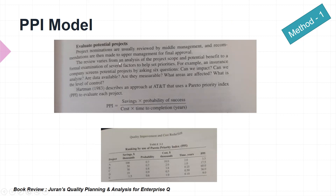Project nominations are usually reviewed by middle management, and recommendations are made to upper management for final approval. The review examines project scope, potential benefits, and several factors to set priority. For example, an insurance company screens potential projects by asking six questions: Can we impact it? Can we analyze it? Is data available? Are they measurable? What areas are affected? And what is the level of control?